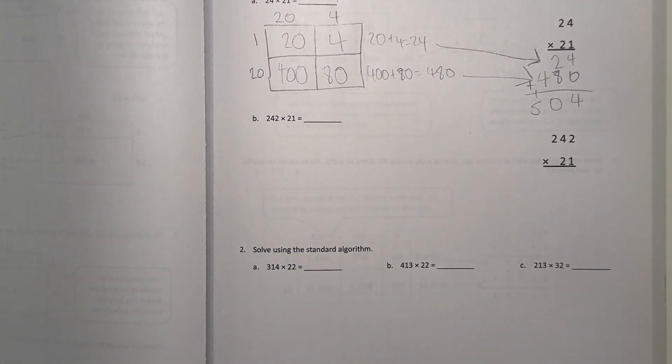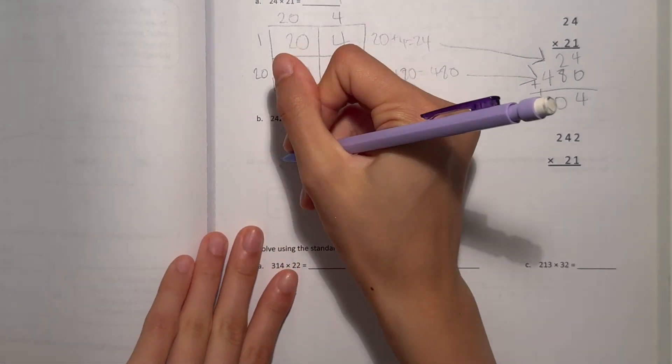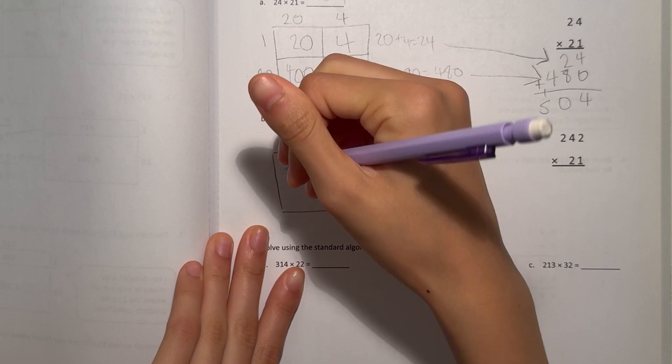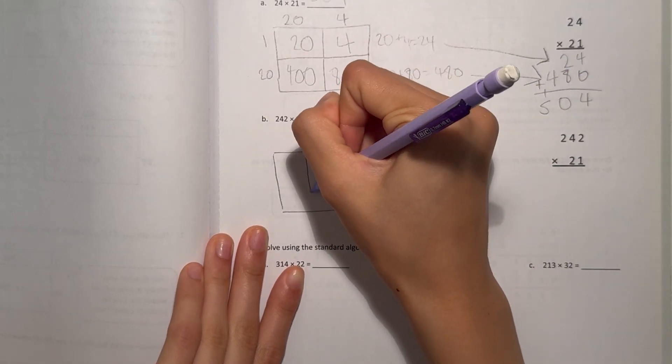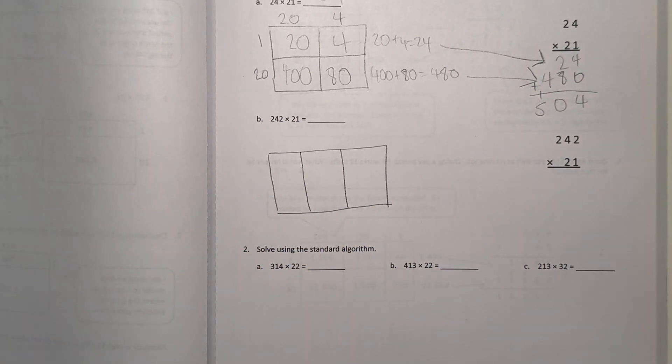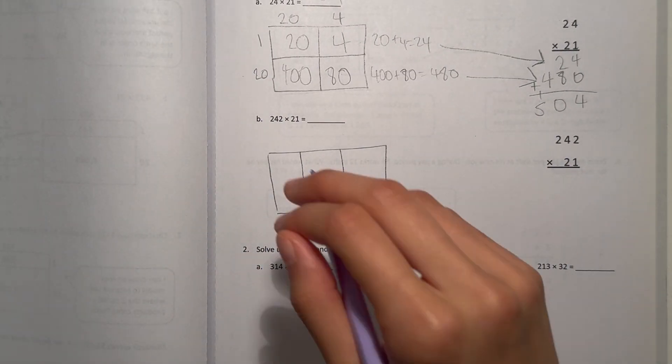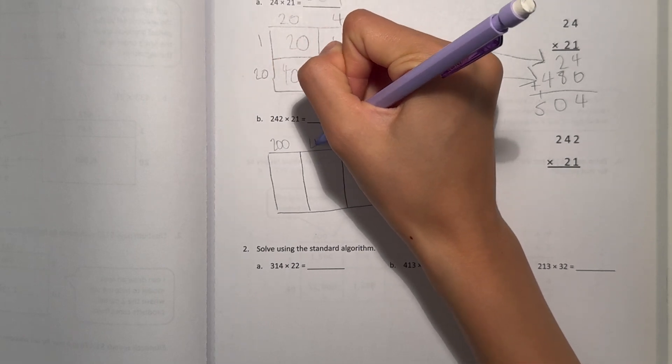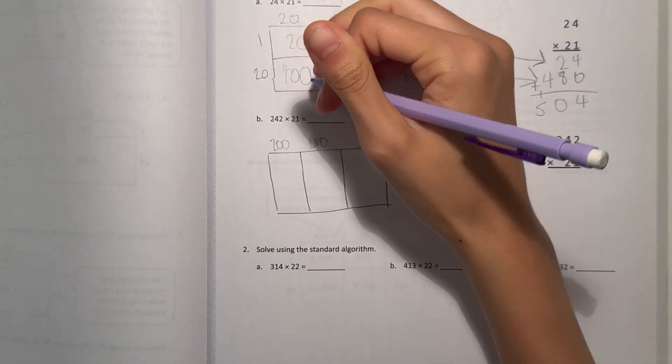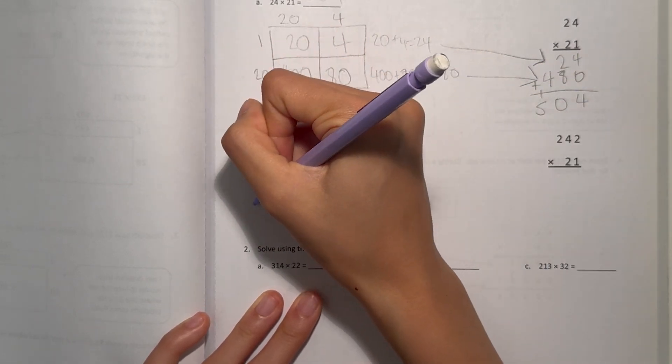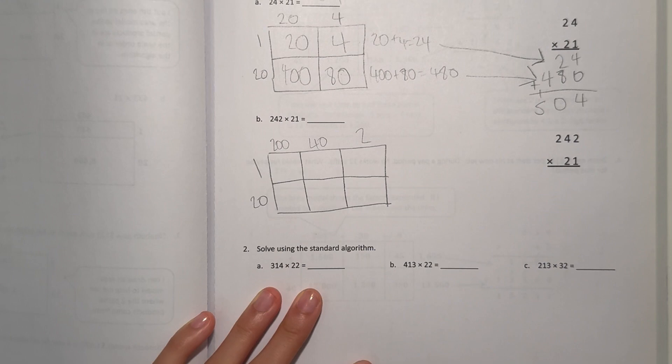B. 242 times 21 is our area model. To set it up, we're dividing it into 3 because 242 has 3 digits. So it would look like 200, 40, 2. And now 21 has 2, so we only split it in half. Now we have 20 and 1.